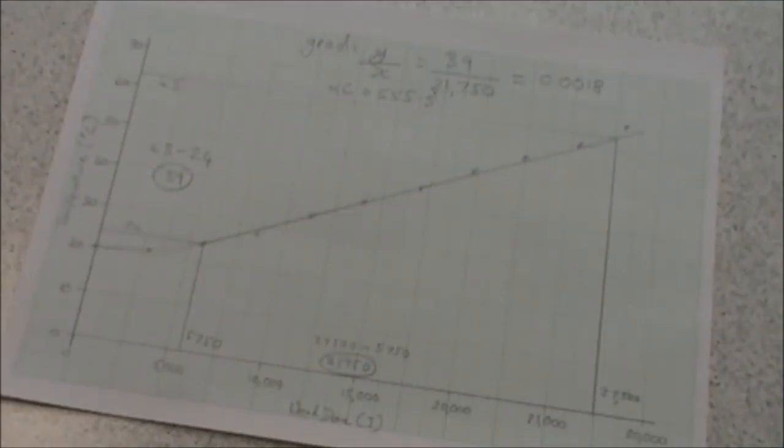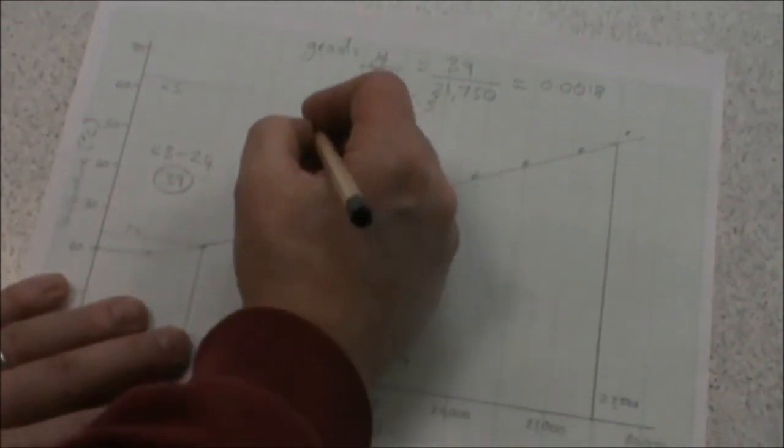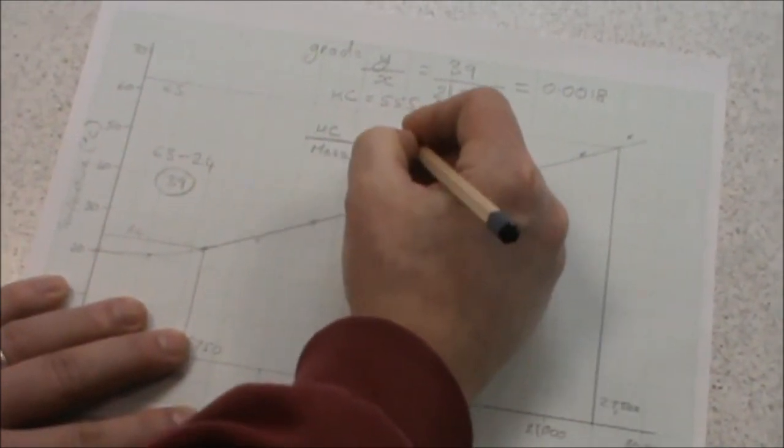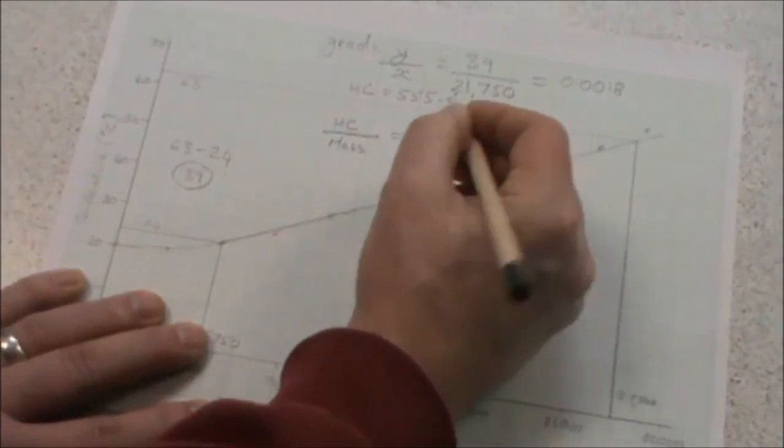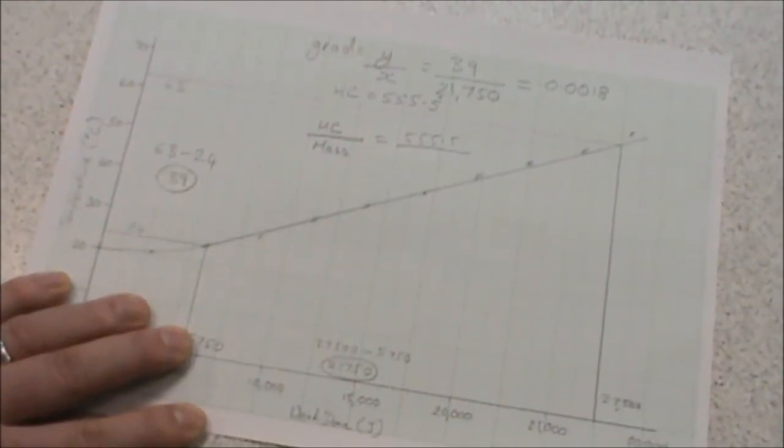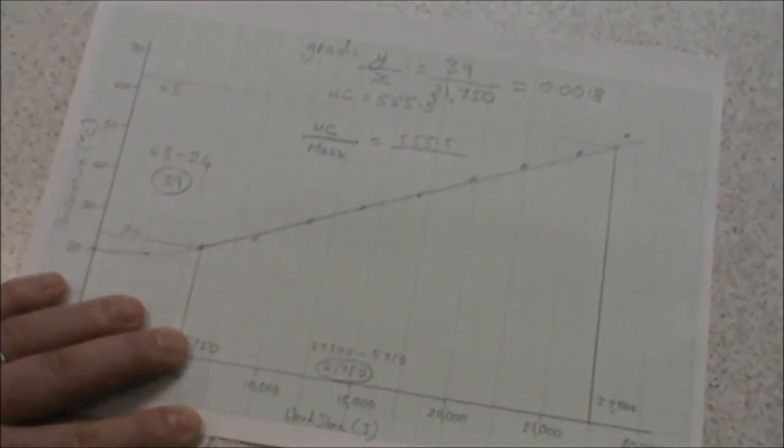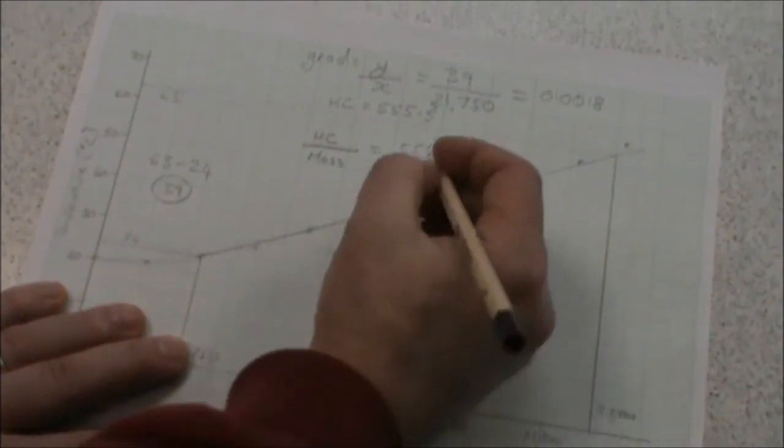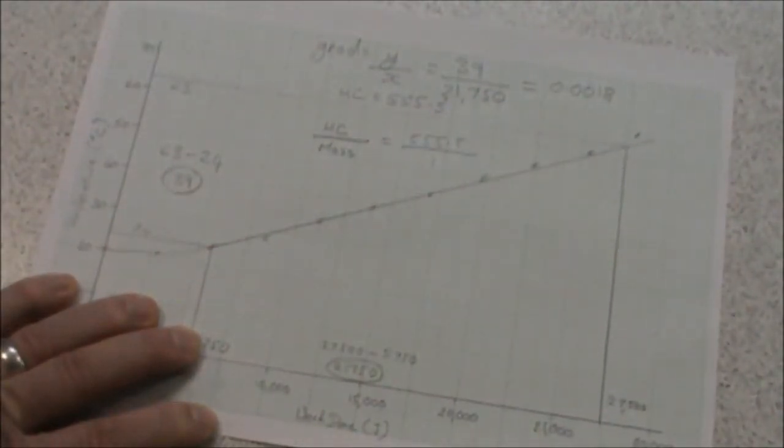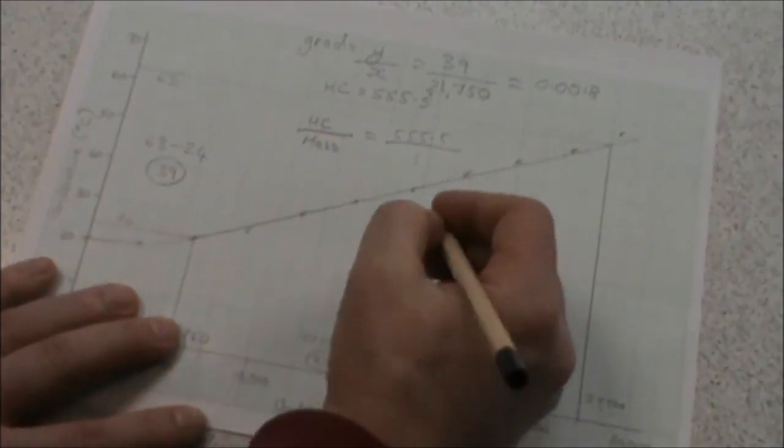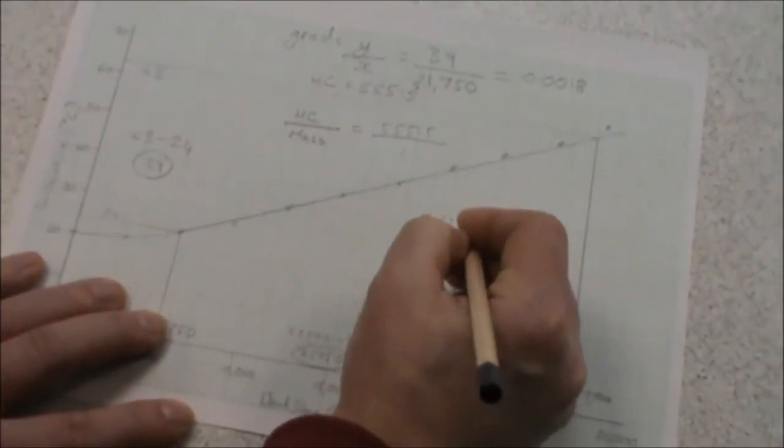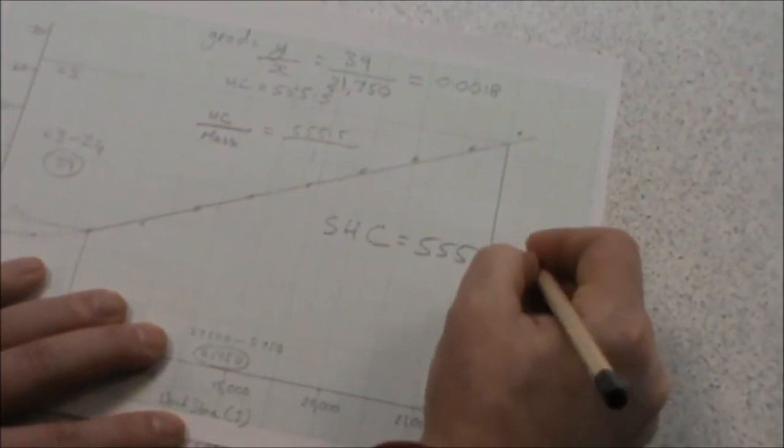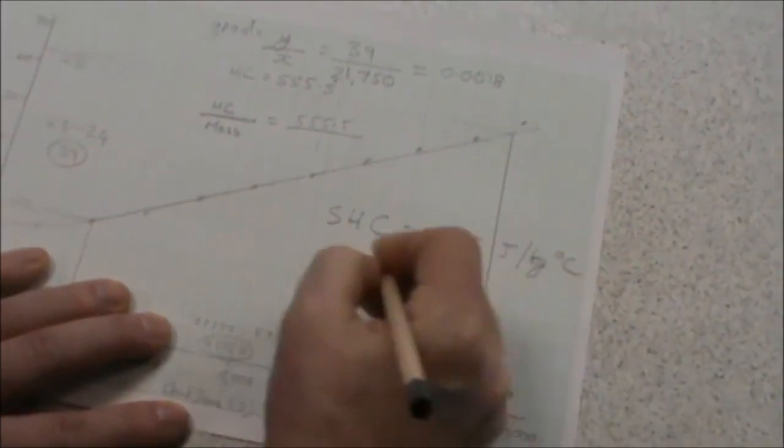To calculate the specific heat capacity for the block, we take the heat capacity and divide it by the mass of the block. Our heat capacity is 555.5, and our block was 1,000 grams, which we need to convert to kilograms. To convert from grams to kilograms, we divide by 1,000, which gives us a mass of 1 kilogram. 555.5 over 1 gives us a specific heat capacity of 555 joules per kilogram degrees C.